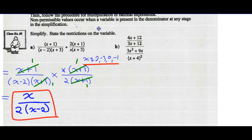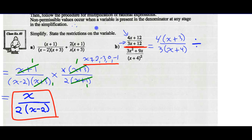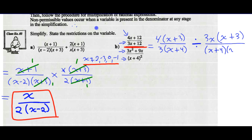Part B. Step 1 is always to factor. The numerator 4x plus 12 has a common factor of 4, leaving x plus 3. Over the denominator with a common factor of 3: 3x divided by 3 is x, and 12 divided by 3 is 4. We're dividing by a second rational expression. The common factor of 3x squared plus 9x is 3x: 3x squared divided by 3x is x, and 9x divided by 3x is 3. All over x plus 4 squared, written as x plus 4 times x plus 4. I have now finished factoring.